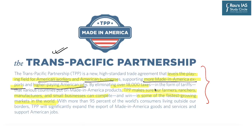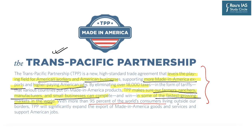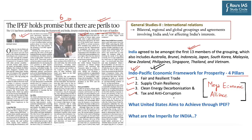With respect to TPP, it highlighted that by eliminating various taxes, it makes sure that the farmers, ranchers, manufacturers and small businessmen of America can compete and win in some of the fastest growing markets in the world. It also highlights that more than 95% of the world's consumers live outside America. Since the Indo-Pacific Economic Framework is based on Trans-Pacific Partnership, it has been decided not to make this economic alliance a free trade agreement. Please remember that the Indo-Pacific Economic Framework is not a free trade agreement.